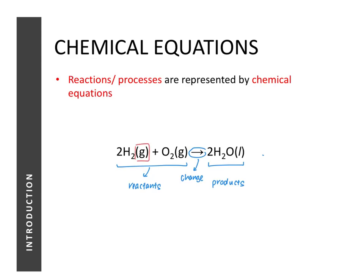The next thing to look out for are the brackets found to the right of each substance — these are called state symbols. They tell us the state of matter the substance is in. For example, (g) stands for gas, (l) stands for liquid, (s) stands for solid, and (aq) stands for aqueous, meaning dissolved in water.